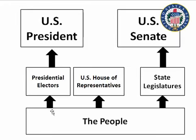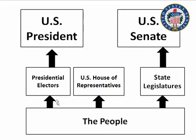Here's the original constitutional flow. The people vote directly for the House of Representatives — that's called the people's house. For the president, the people indirectly elect him: they vote for presidential electors, who go to the Electoral College and then elect the president. The Senate worked the same indirect way originally. The people would vote for their state legislators, and then the state legislature would vote for the two United States senators sent to Washington, D.C. So there was no direct route to the Senate.